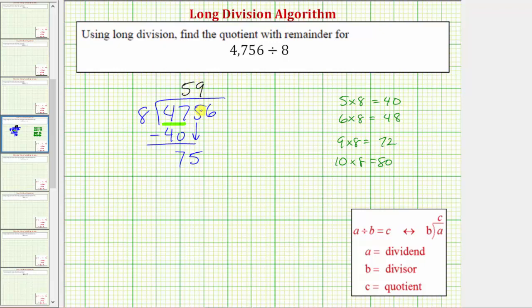9 is the next digit in the quotient. We place the 9 above the 5, which is in the tens place value. Now multiply by the divisor. 9 times 8 is 72. And we subtract. 75 minus 72 is 3. Once again, notice how the difference is less than 8, so the 9 is correct.